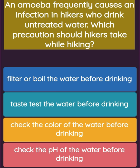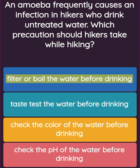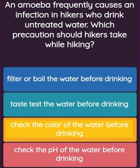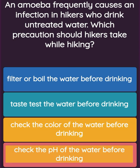An amoeba frequently causes an infection in hikers who drink untreated water. Which precaution should hikers take while hiking? Option one: filter or boil the water before drinking. Option two: taste test the water before drinking. Option three: check the color of the water before drinking. Option four: check the pH of the water before drinking.